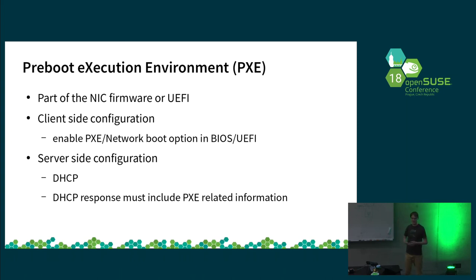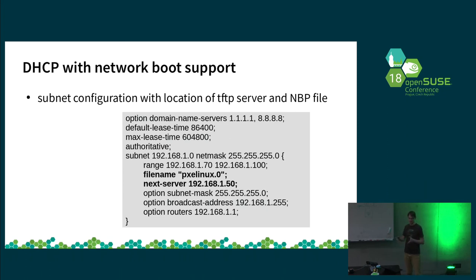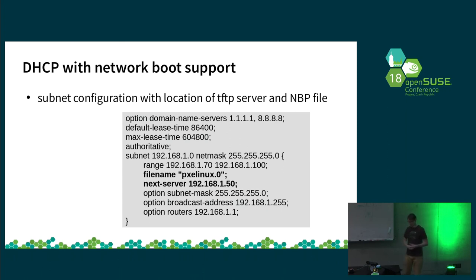I mention it twice because it's important enough. DHCP with network boot support: you have the usual configuration when you install the package, but you must make sure you add two highlighted bits. One is the server name, or 'next server' — you can use domain name, hostname, or IP address depending on whether you have a DNS server. And the filename, which points to the NBP — in our case, PXELinux. You can put a plain filename or add a directory if it's in a different location.